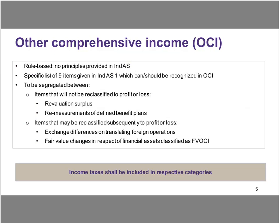OCI essentially is a rule-based concept. There are no principles provided within India's as to what Other Comprehensive Income or OCI is all about. There is a comprehensive list of nine items provided in India's One — items which either can, meaning at the option of the company, or should, meaning mandatorily by the company, need to be recognized in Other Comprehensive Income.